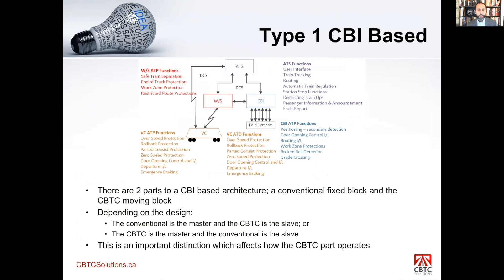There are two important aspects of the CBI architecture. There's the conventional fixed block portion and the moving block portion, and the two work together. Depending on the design, the conventional fixed block can be the master and the CBTC is the slave, or the CBTC is the master and the conventional fixed block is the slave. This is an important distinction because it affects how the system operates. In the first case, where fixed block is the master, the interlocking is defined by the CBI and the wayside tries to bring trains closer together by interfacing with the CBI.